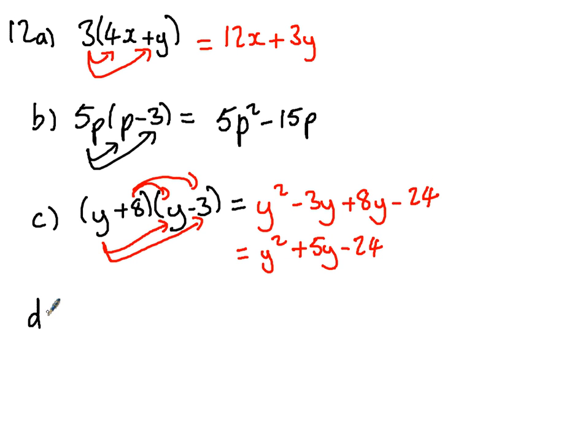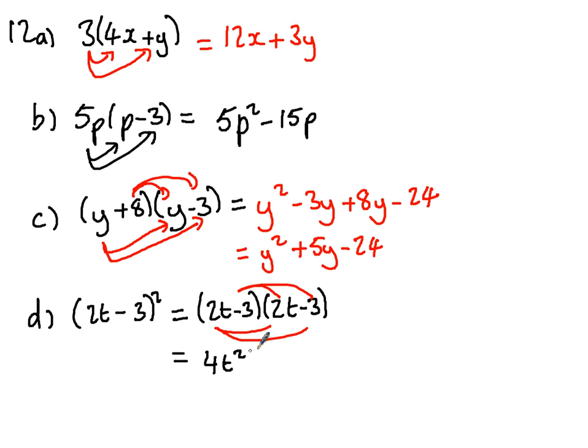Finally, D. 2T minus 3, all squared. The biggest error is to write 4T squared plus 9, because you're just squaring the two bits. Squared bracket means that we square the bracket. It's the bracket squared, so it means bracket times bracket. We have the same part here again. 2T times 2T is 4T squared. 2T times minus 3, 2 times 3 is minus 6T. Minus 3 times 2T, minus 6T again. Then minus 3 times minus 3, two minuses give us a plus, and it's 9. That'll collect together to give us 4T squared minus 6, take another 6, minus 12T, and then plus 9 at the end.